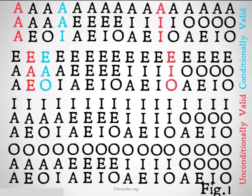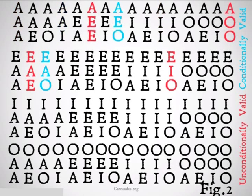In figure one, there are four versions that are unconditionally valid — meaning valid for both Boole and Aristotle — and there are two that are conditionally valid, meaning not valid for Boole and only valid for Aristotle if something exists. For figure two, similarly, there are four unconditionally valid and two conditionally valid.